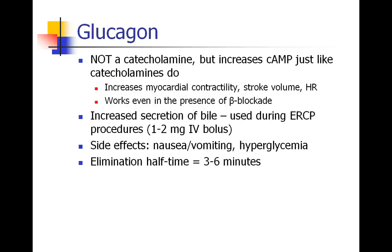Glucagon is not a catecholamine, but it does many things catecholamines do. For example, it increases cyclic AMP levels, which causes glucagon to increase myocardial contractility, stroke volume, and heart rate. Interestingly, it acts like a catecholamine and works even in the presence of beta blockade — so glucagon has been used as a treatment in patients with beta blocker overdose. Glucagon also increases bile secretion, and you may be asked to administer glucagon during an ERCP. Side effects include nausea, vomiting, and hyperglycemia, and it has a very short elimination half-time.